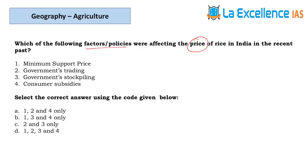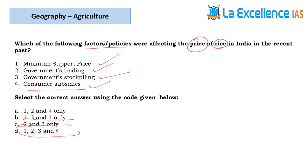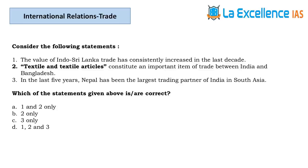The next question is about factors affecting price of rice in India recently. MSP — yes, more farmers will grow the crop; statement 1 correct, eliminate. Government's trading — how much the government buys also affects price; statement 2 correct. Government stockpiling, i.e., buffer stock maintained by the government — yes, this will also affect price. Consumer subsidies — if more subsidies given, consumers buy more. All four are correct; answer is D.